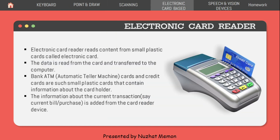Electronic card reader reads content from small plastic cards called electronic cards. You may have seen these as debit cards or credit cards from banks. Data is read from the card and transferred to the computer. Bank ATM (automatic teller machine) cards and credit cards contain information about the card holder, and information about the current transaction or bill purchase is added from the card reader device.